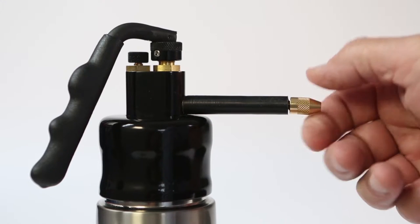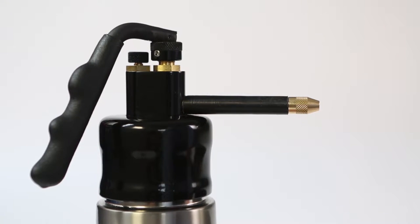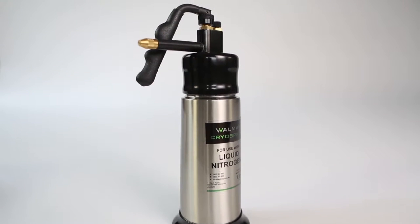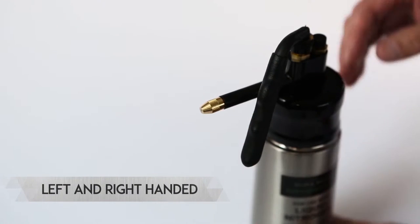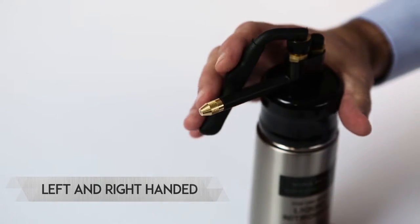Hold the knurled end of the probe and screw it into the brass outlet thread. The regulator handle can be positioned left or right, adjacent to the probe.